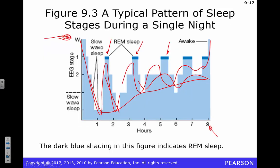Have you heard of sleep rebound? If you stay up all night and then give yourself the opportunity to sleep, you'll actually sleep longer than normal. If you normally sleep eight hours and stay up a whole night, you might sleep twelve hours the next night, then nine or ten hours the night after, and after two or three nights you get back to your normal eight-hour sequence. That's called sleep rebound — you try to recover the sleep you lost.